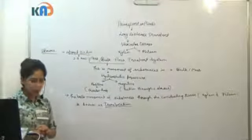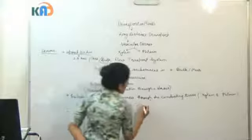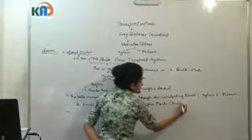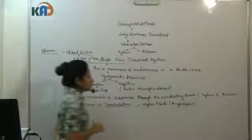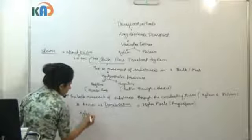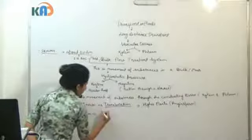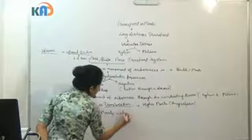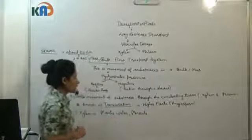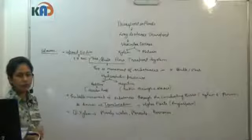Translocation is found in higher plants like angiosperms because they have well-developed conducting tissues. Xylem mainly translocates water, some mineral ions, and also some hormones.